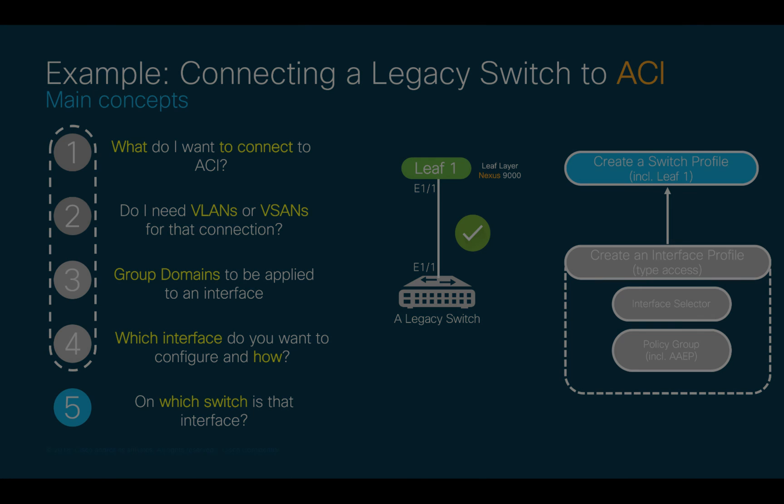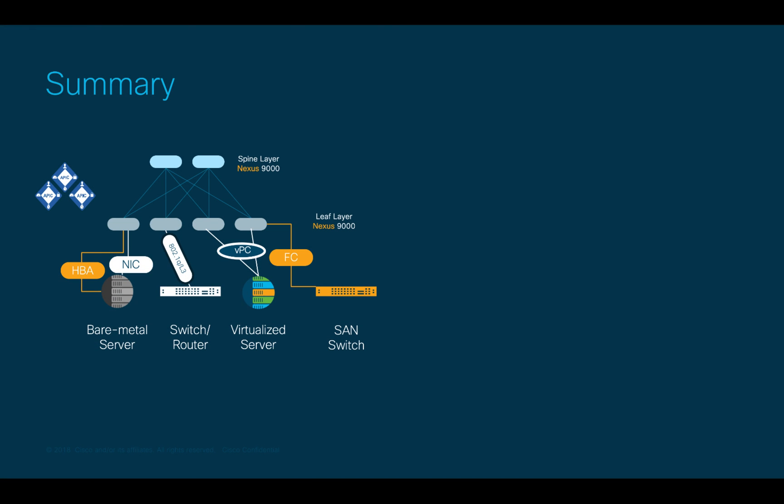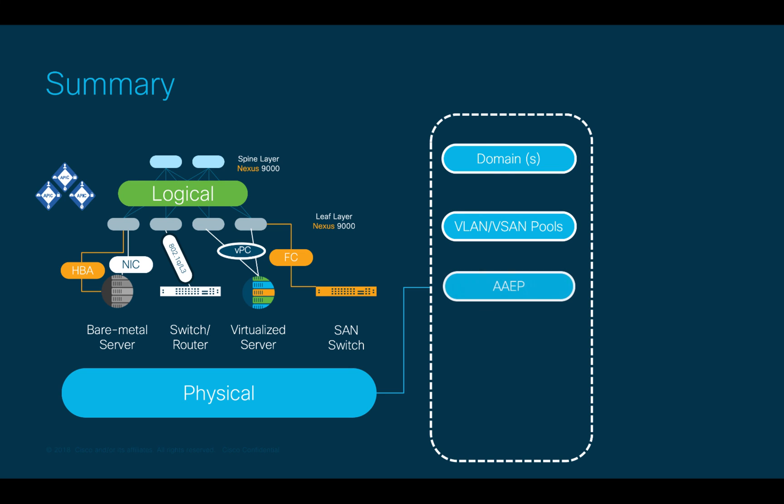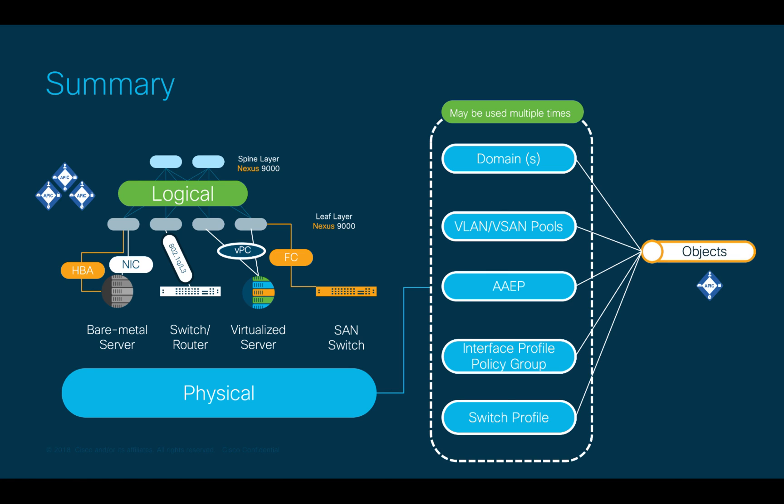In today's chapter, we will learn the physical connectivity model and the basic questions we will be asking ourselves every time we need to connect something to ACI, which will lead us to configure the elements we will need. Keep in mind that many of these elements within the ACI fabric may be used multiple times for other connections as well, since APIC provides us with a model that creates objects behind the scenes for each of them. This allows us not only to reference them in other configurations, but also to consume and modify them through APIC RESTful API, which may allow you to also configure your ACI fabric through orchestrators, or DevOps tools if you prefer, in an open fashion.